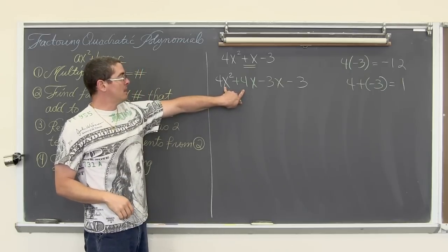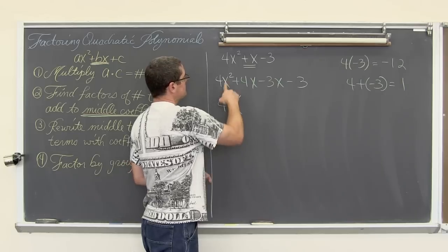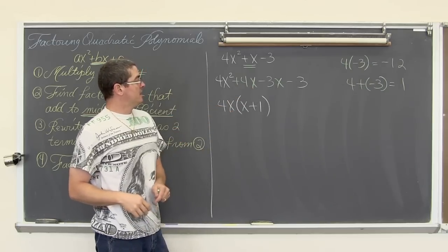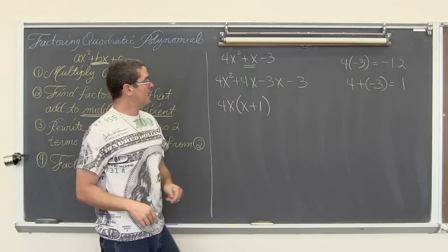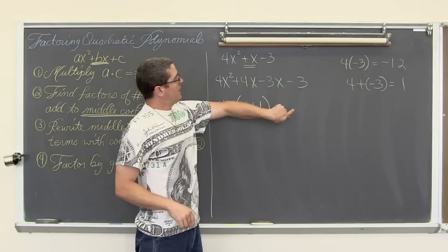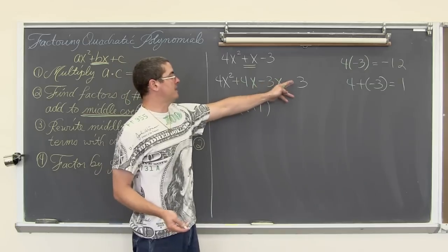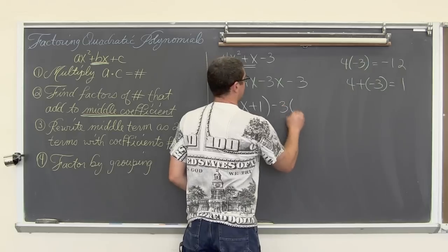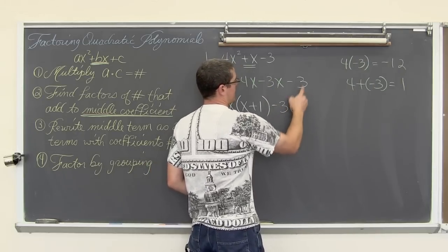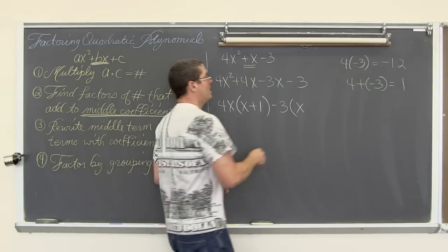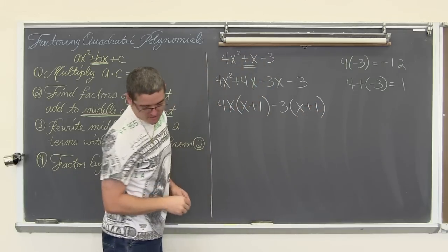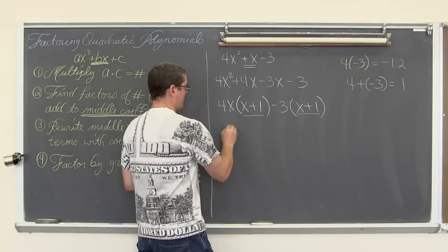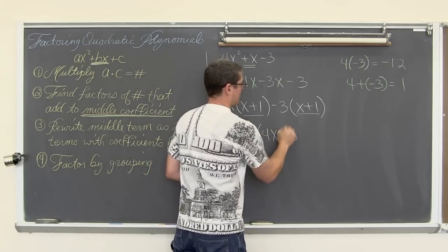We rewrite the trinomial as 4x squared plus 4x minus 3x minus 3 — those two middle terms equal 1, our middle coefficient. Factoring the first two terms, a 4 and an x come out giving 4x times (x plus 1). For the last two terms, both have a 3 and are negative, but since we need to match the positive x plus 1 inside the first grouping, we factor out negative 3, giving negative 3 times (x plus 1). There are our matching factors, so the answer is (x plus 1)(4x minus 3).